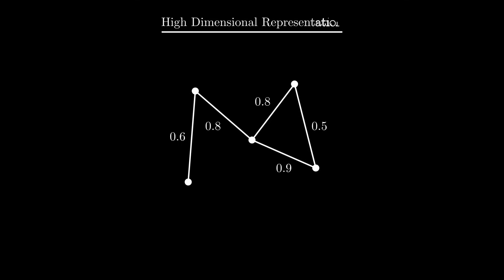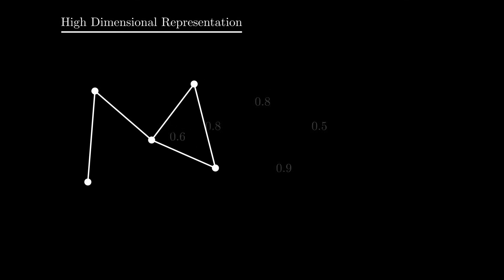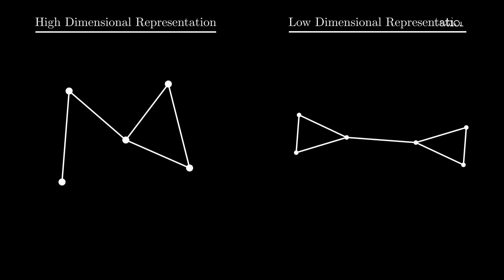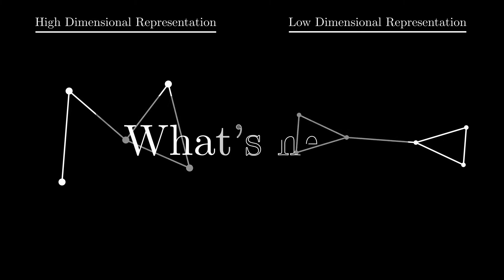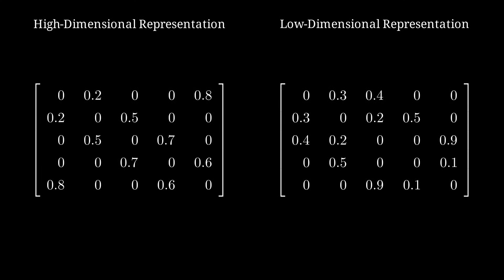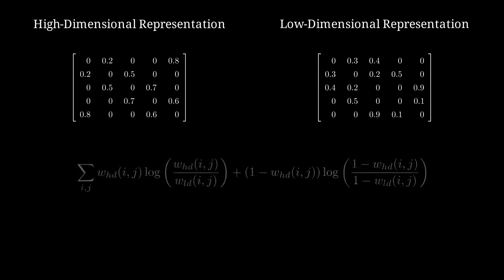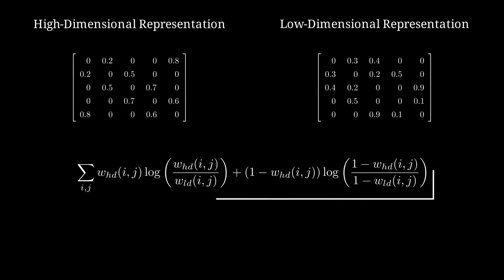Now that we have our final graph construction, we repeat the same process for our initial low-dimensional representation, which gives us another weighted binary graph. So can you guess what the next step of the algorithm will be? You've guessed right. We'll try to match both representations with the help of a loss function. To calculate how close the two graphs are, we use their adjacency matrices, which represent the weight of each edge in the graph. We then compute the cross-entropy over these matrices and simply minimize it using stochastic gradient descent, and we adjust the low-dimensional representation accordingly.